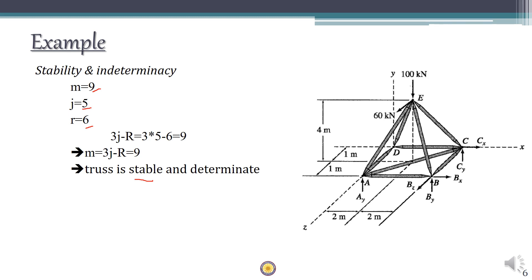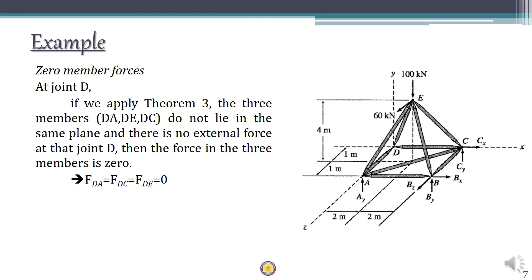The space truss is stable and determinate and can be analyzed using only equilibrium conditions. Now let's find the zero-force members. At joint D there is no external load and three members meet — DC, DE, and DA — and none of these members belong to a common plane. By the zero-force member theorem, members AD, CD, and DE all have zero member forces and can be neglected in further analysis.